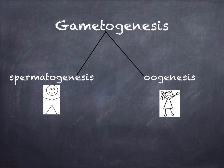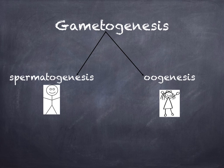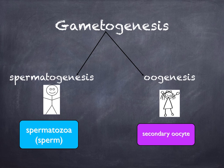Sexual reproduction leads to genetic diversity amongst the offspring it produces. This diversity allows organisms to evolve in response to the changing world around them. Essential to sexual reproduction are gametes, which are produced by a mechanism called gametogenesis. In mammals, gametogenesis takes two forms: spermatogenesis in males and oogenesis in females. The gametes are haploid reproductive cells that fuse with another gamete of the opposite sex to form a diploid zygote, which marks the beginning of a new individual.